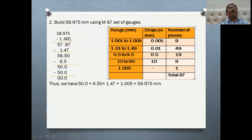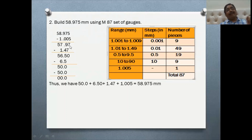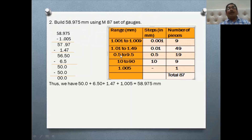Second example: 58.975 mm. Concentrate on the last decimal — 0.005 — so select 1.005; remainder is 57.97. A tip: always use the minimum number of slip gauges. Here 0.97 is considered together — select 1.47; remainder is 56.50. If you get 0.5 as a remainder, select 6.5; remainder is 50. Select 50 from the 10–90 range. Total: four slip gauges build 58.975 mm.